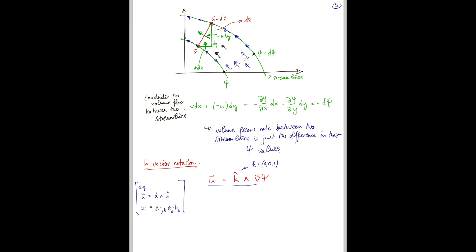So, let's write that here. Here, we have ui equal epsilon ijk delta j3, that's our k vector, right? It's 0 for j equals 1 and 2 and 1 for j equals 3. And then d psi dxk.